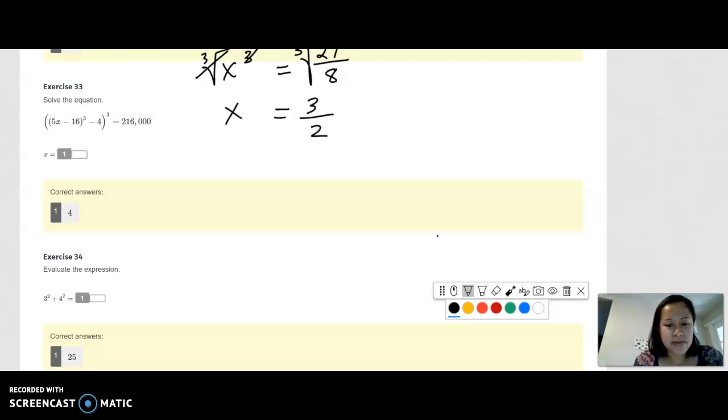Finally, number 33. I had a couple questions on that. Solve the equation 5x minus 16 cubed minus 4 cubed. So we're going to undo the outermost exponent first. That means you want to go ahead and cube root.